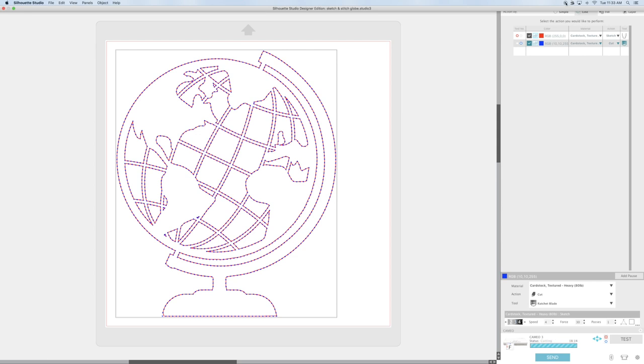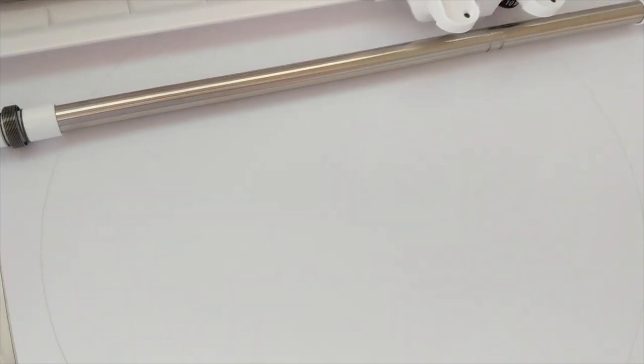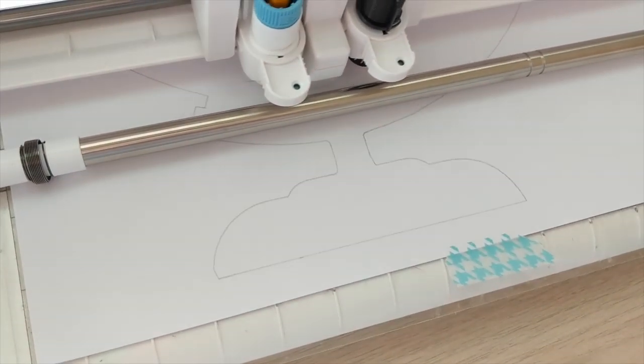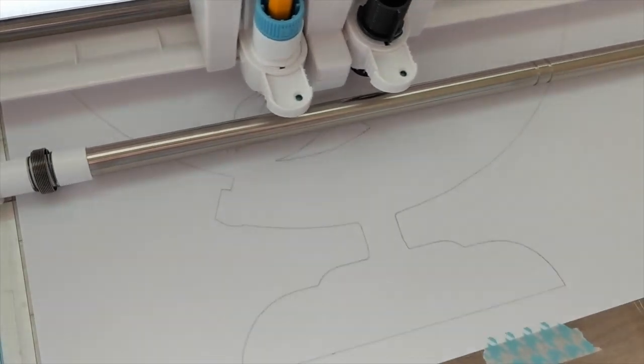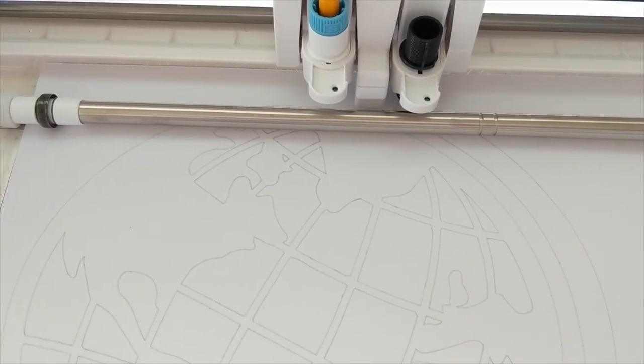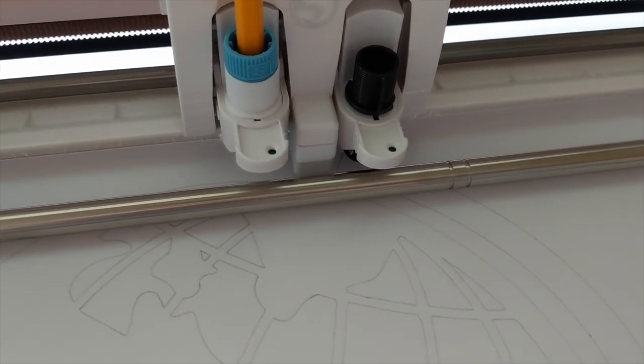It's telling me about 18 minutes to draw and cut, but it actually took almost two hours for my machine to do this. So you can see it's drawing with the pencil first. Or if you put in a Silhouette sketch pen, it will do the same thing and draw it. Once it's finished drawing, you don't have to unload and reload. It's just going to start cutting the little circles or the stitching holes.